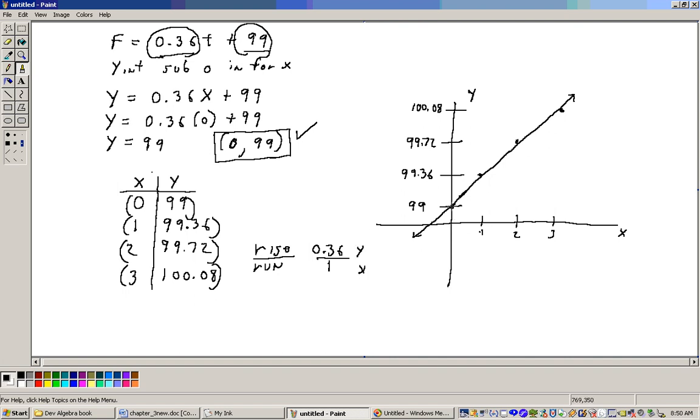So run 1. Here we are at this Y-intercept. Plot that first, 0, 99. Now run 1 and rise 0.36. Boom, there's your next point. That's really all you needed.